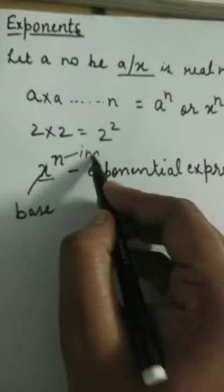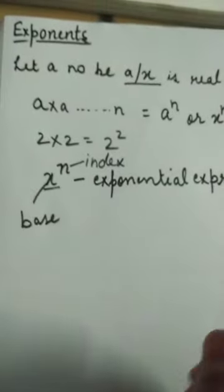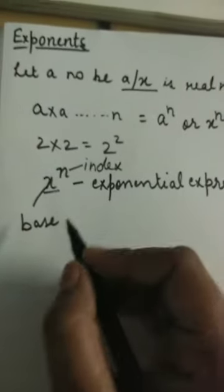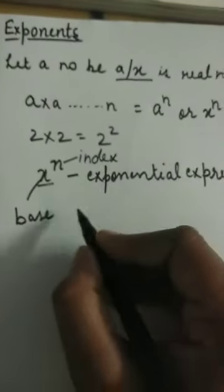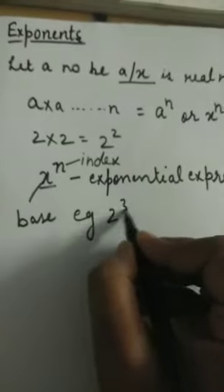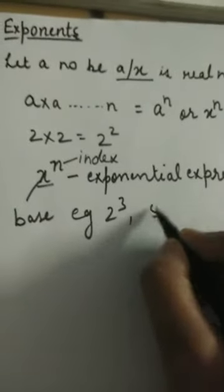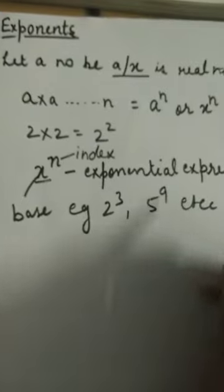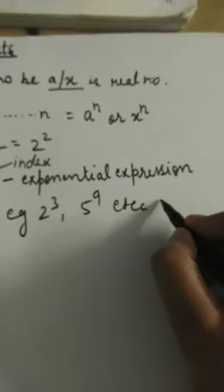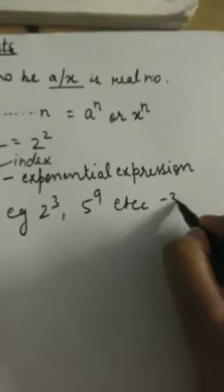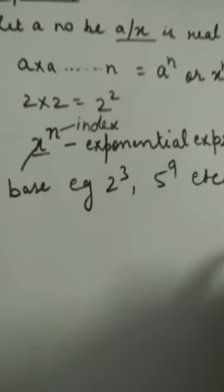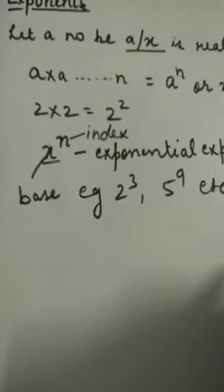We can take examples such as 2 power 3, 5 power 9, and it can also be a negative number like minus 3 power 4. Now we have some laws of exponents which we have to follow to solve the questions.